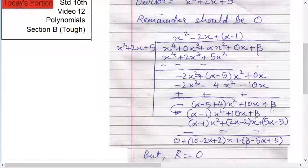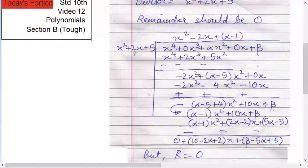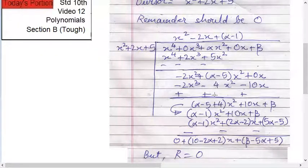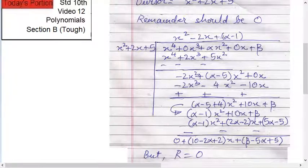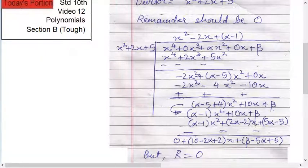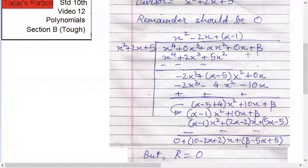So it becomes alpha minus 1, which means you can divide it by alpha minus 1. So x squared into alpha minus 1, same is same here. Now 2x into alpha minus 1, so it becomes 2 alpha minus 2 into x. And 5 into alpha minus 1, so it becomes 5 alpha minus 5.